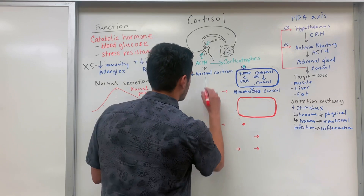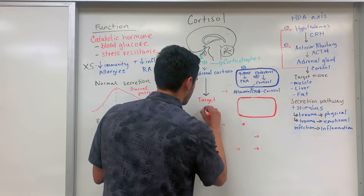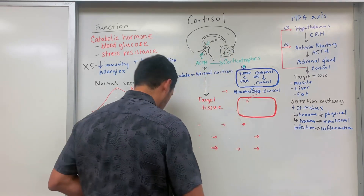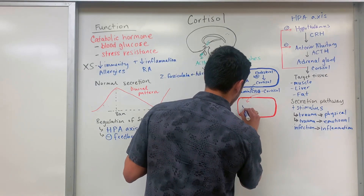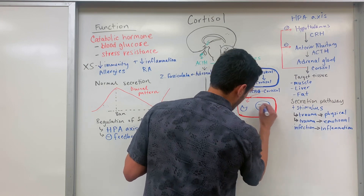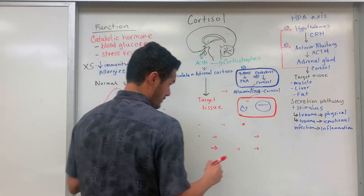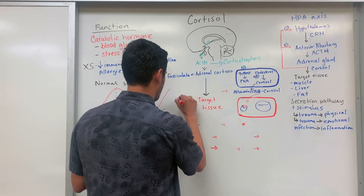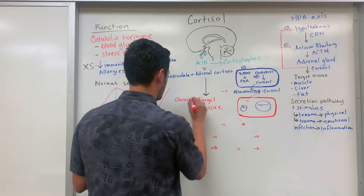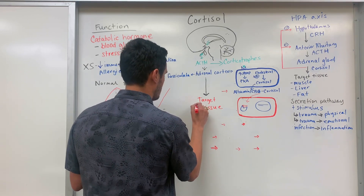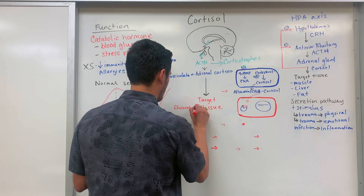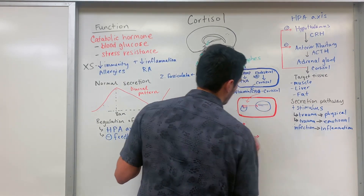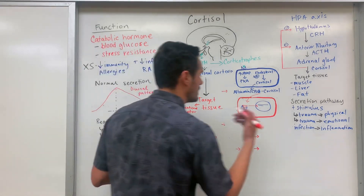Once cortisol gets to its target tissue, it will diffuse in and bind to its receptor. It binds to what's known as the glucocorticoid receptor. From there, translocation will occur — we can activate the transcription factors and then synthesize the necessary enzymes.